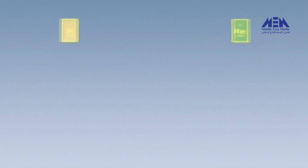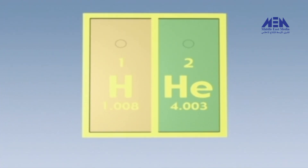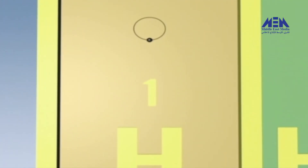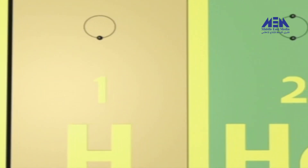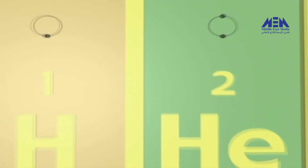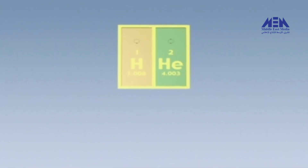It is the electron arrangement of each element that determines its place in the periodic table. A Bohr-Rutherford diagram for the first element in the table, hydrogen, shows us a single electron occupying the first allowable orbit around the nucleus of the atom. Only two electrons can occupy this first orbital shell. These two electrons are present in helium. Hydrogen and helium are the only two elements which can share this first orbital shell.